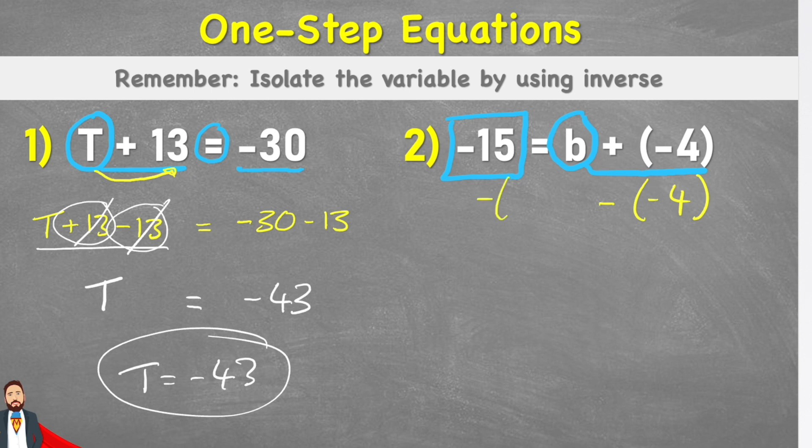So I put my subtract negative 4 on that side too. So my new line would read negative 15 subtract negative 4 equals B plus negative 4 minus negative 4. Now, when we look at this right-hand side, we can see that the plus negative 4 and the subtract negative 4 will cancel themselves out and equal 0. So I'm left with just B.